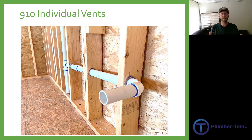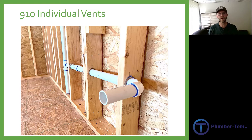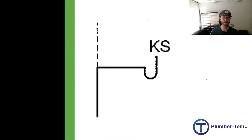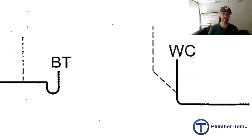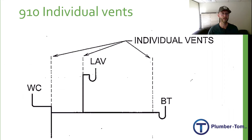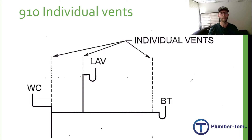Section 910 gives us our first and most reliable option for any venting, and that is the individual vent. There's not a lot to be said about this — there's only a very short paragraph in the code about this because it is so basic. It is that every trap receives its own vent. When you do it that way, there's plenty of pipe, plenty of air, and everything tends to flow pretty well. Here are some examples of individual vents in diagrams: a kitchen sink with an individual vent, a bathtub with an individual vent coming off the horizontal, a water closet with an individual vent, or a whole bathroom group with each fixture having its own vent. These individual vents work great, but they are time consuming and they cost a lot in materials by comparison.